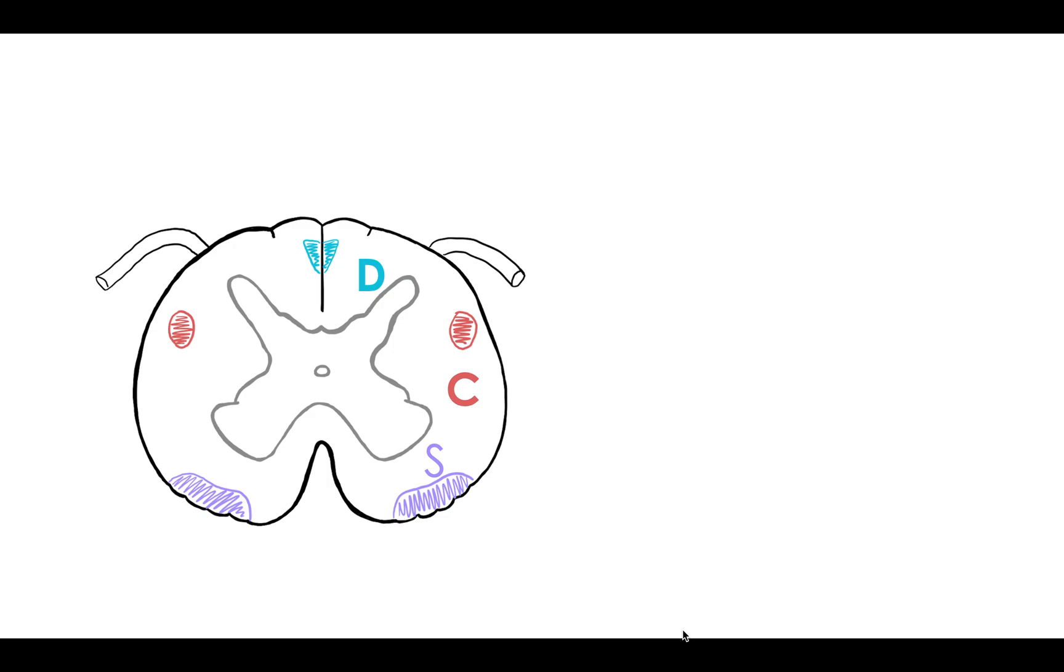So what do these each mean? D is for dorsal column, and the mnemonic is going to be people touching and vibrating for proprioception, fine touch, and vibration. And the whole mnemonic will make sense once you see each section. So if you can remember, D is dorsal column,